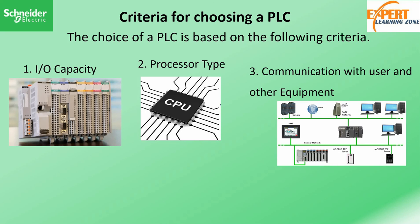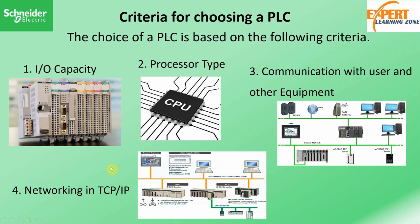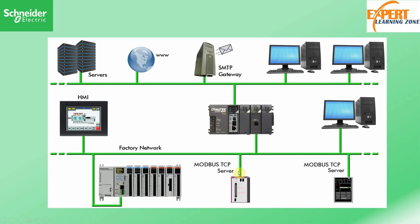The third criterion is communication with other equipment. Based on the PLC's capacity to communicate with devices such as HMIs, other PLCs, SCADA systems, and feedback control systems, you choose a PLC based on those features for your specific application. The fourth criterion is networking capability, particularly TCP/IP networking. Without proper networking capability it becomes very difficult to integrate an application into an already existing system, so you should choose a PLC based on its networking capability.